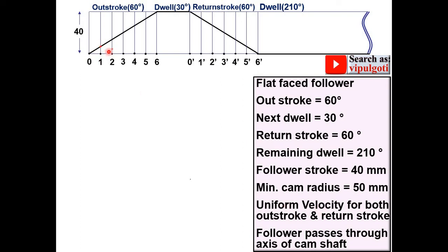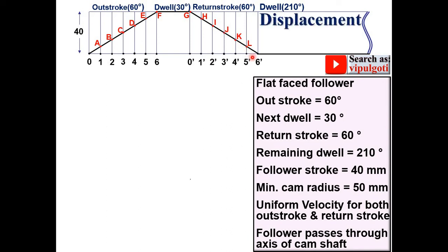Now mark the intersection points and give them the names a, b, c, d, e, f. Similarly, mark the intersection points for the return stroke and give them the names g, h, i, j, k, l. This completes your displacement diagram.